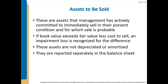If we find that our fair value minus any costs we would incur to sell that asset is less than the book value these assets to be sold are recorded at, we have to recognize an impairment loss for the difference. These assets are not depreciated or amortized — if they're being held for sale, we are not depreciating or amortizing them, we are expecting to sell them instead. They are reported separately on the balance sheet, not listed with the other assets.